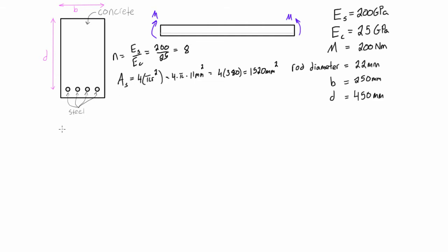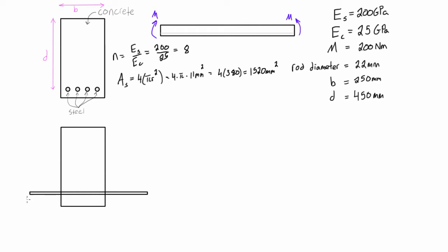We want to draw the transformed section. We would expand the steel out to an area of N times AS, creating a composite shape where everything has the same modulus of elasticity. The neutral axis is somewhere in here. Concrete is comparatively really weak in tension, so anything above the neutral axis in pure bending is in compression, and anything below is in tension. We just assume concrete is not carrying any tension.